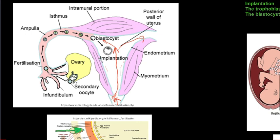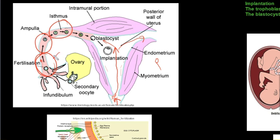The sperm enter the cervix and pass through the uterus towards the fallopian tube. They propel themselves with their tails, powered by mitochondria providing energy, and the fructose found in semen secreted by the accessory glands. The sperm cells make their way through the fallopian tube while the egg cell is also moving through it. Fertilization generally happens within the first third portion of the fallopian tube.